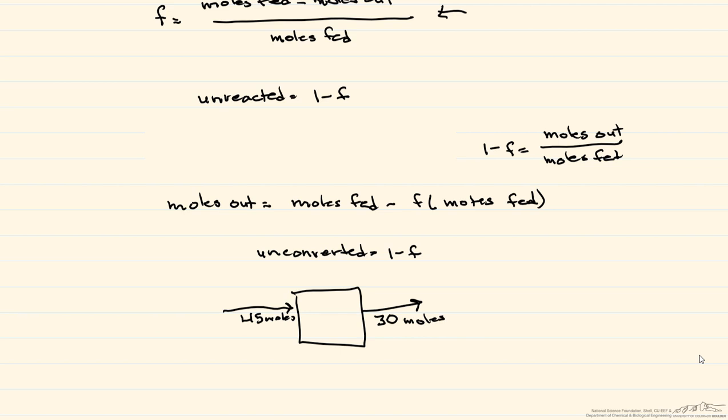So I'm going to go back to this equation. We have 45 moles that are fed minus 30 moles that come out, divided by 45 moles that are fed, and that's going to be equal to 0.33.